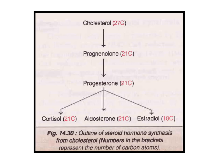These are the general outline of steroid hormone synthesis. Cholesterol is converted into pregnenolone; pregnenolone is converted into progesterone; progesterone is further converted into corticoids, cortisone, aldosterone, and estradiol.